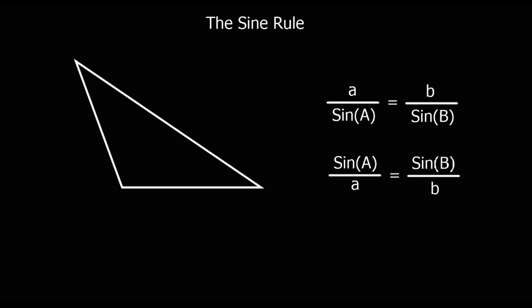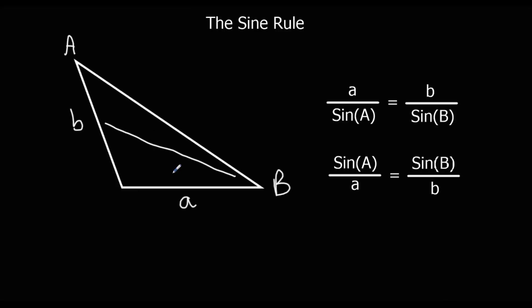We can use the sine rule to work out a missing length or an angle in a non-right-angled triangle. If we've got a right-angled triangle, we use Pythagoras or SOHCAHTOA. This is a non-right-angled triangle, and we use the sine rule when we've got opposites — so when we've got an angle and its opposite length, and another angle and its opposite length. Whenever we've got opposites, that's when we use the sine rule, and we can use it to work out any of these four angles or lengths.